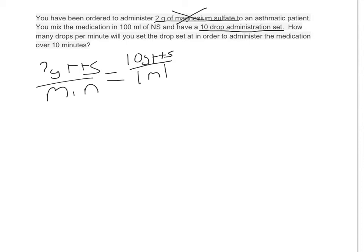10 of these drops will fill up a 1 milliliter syringe. So drops go on the left in the numerator, drops on the right in the numerator, multiplied by our ordered dose: 100 milliliters over 10 minutes.